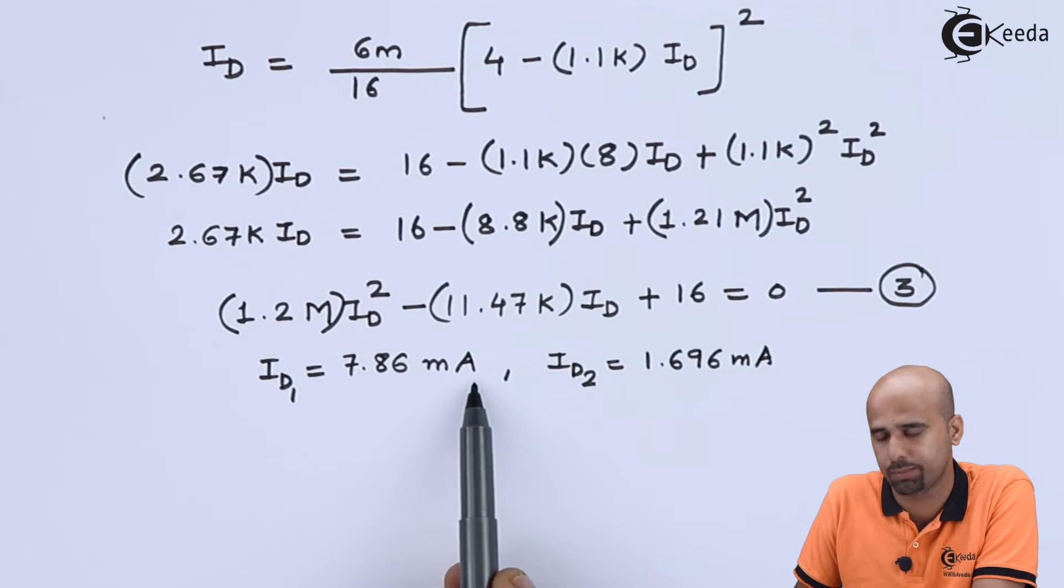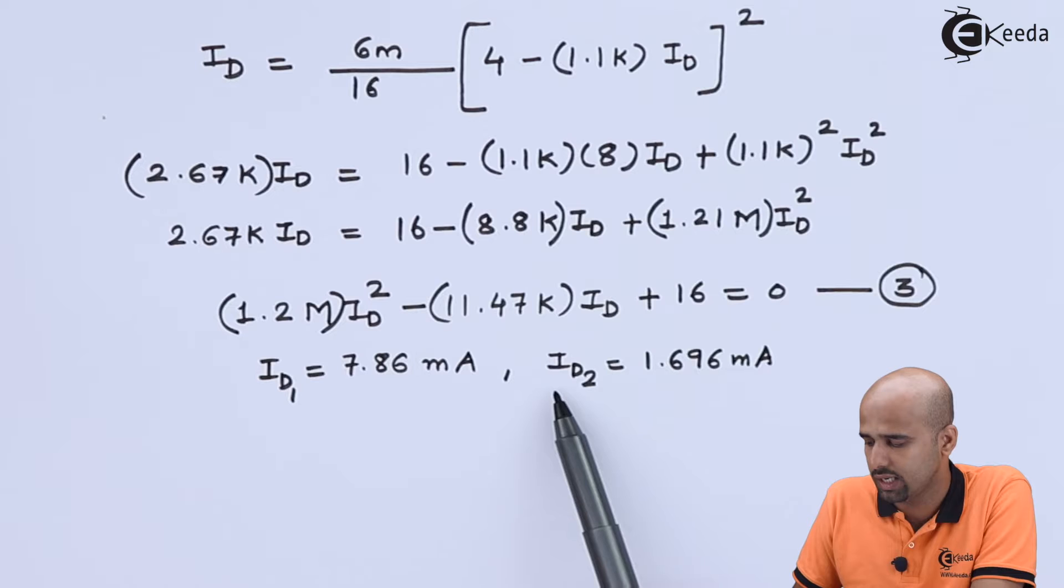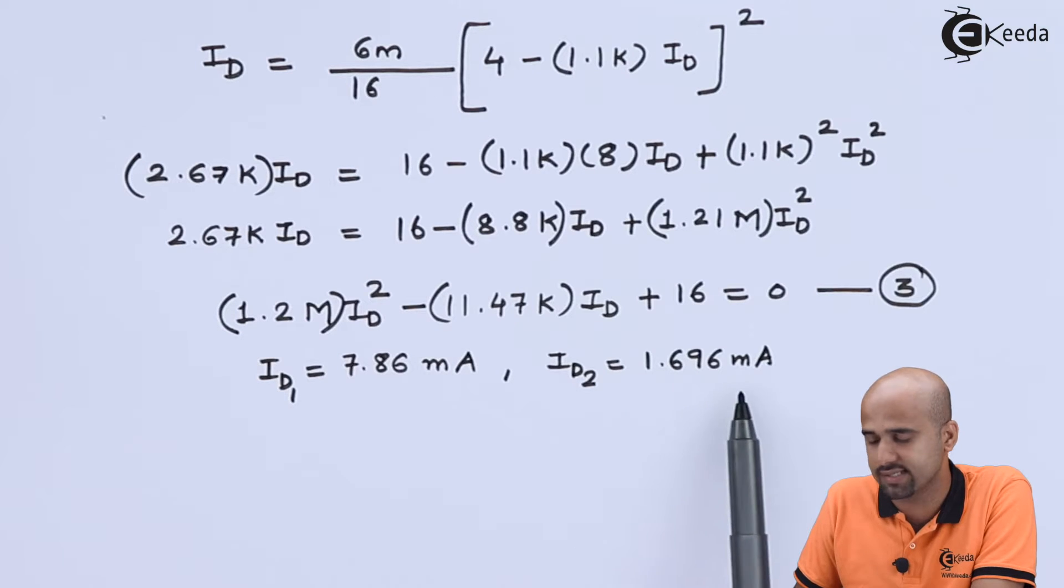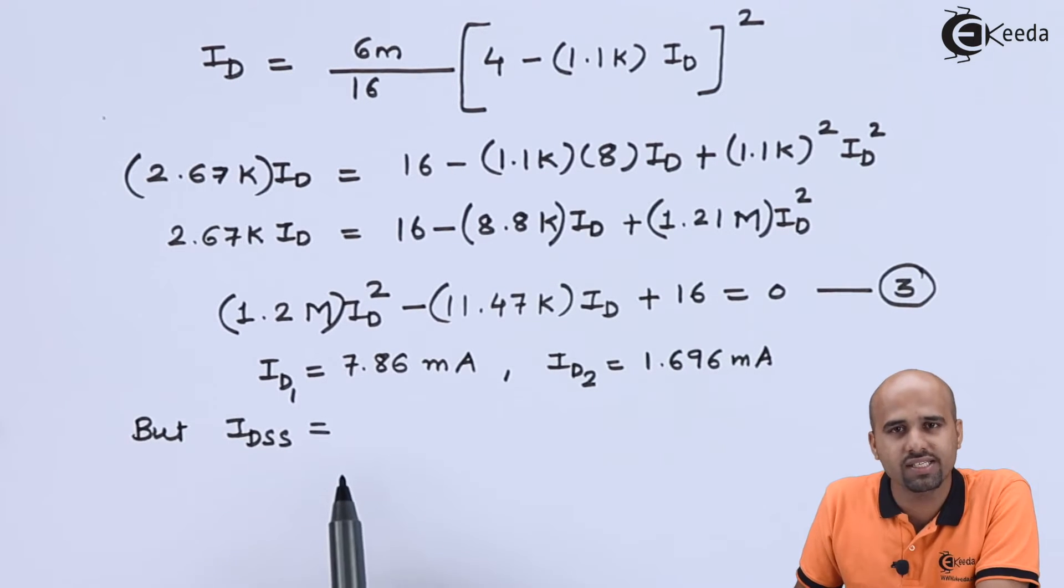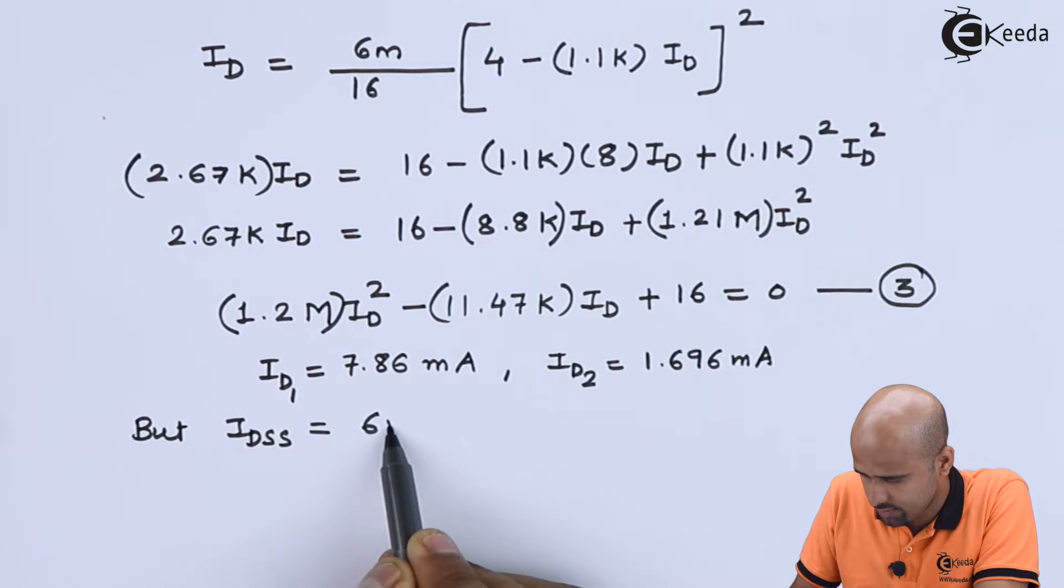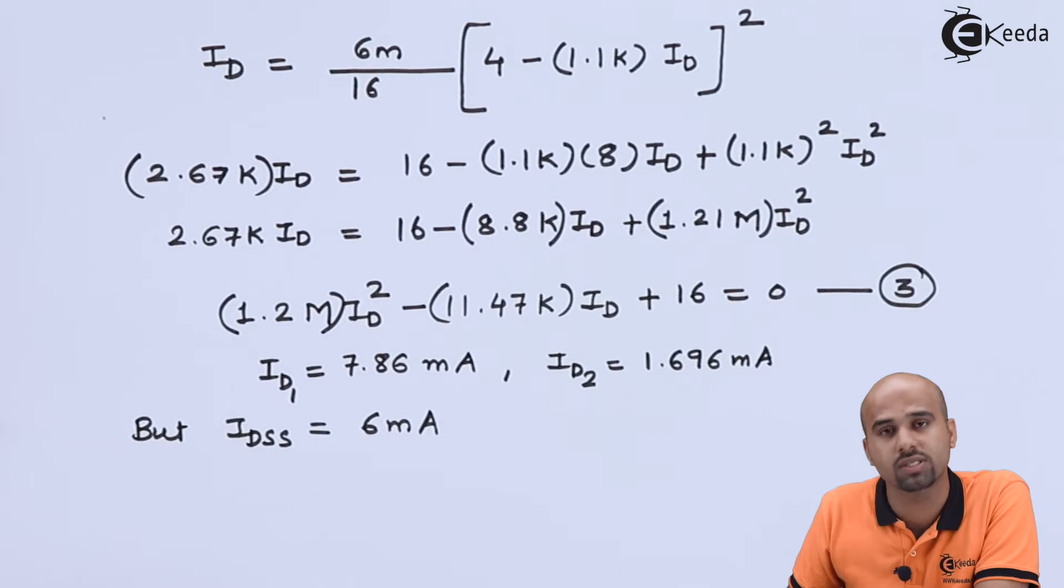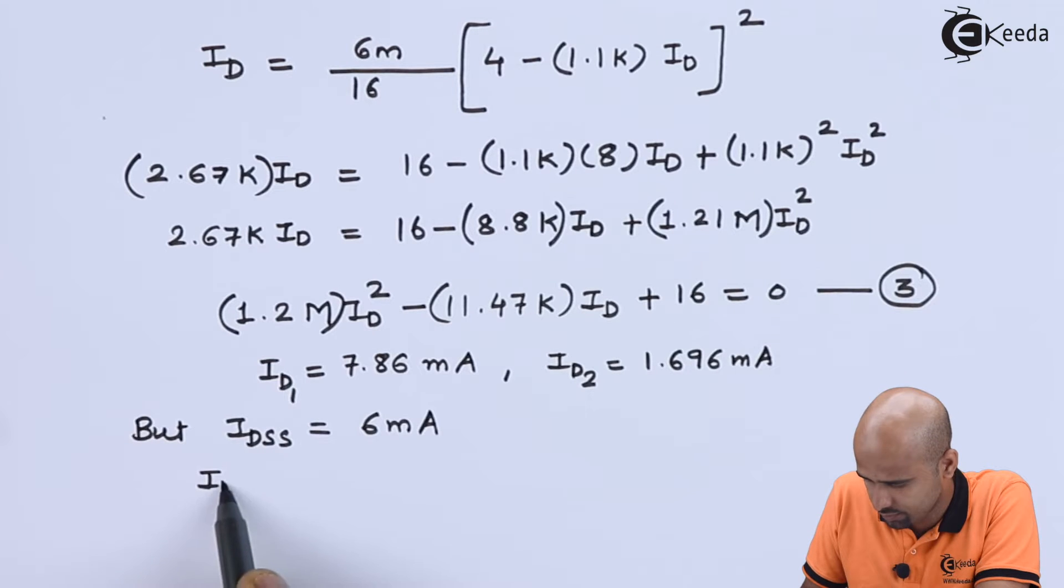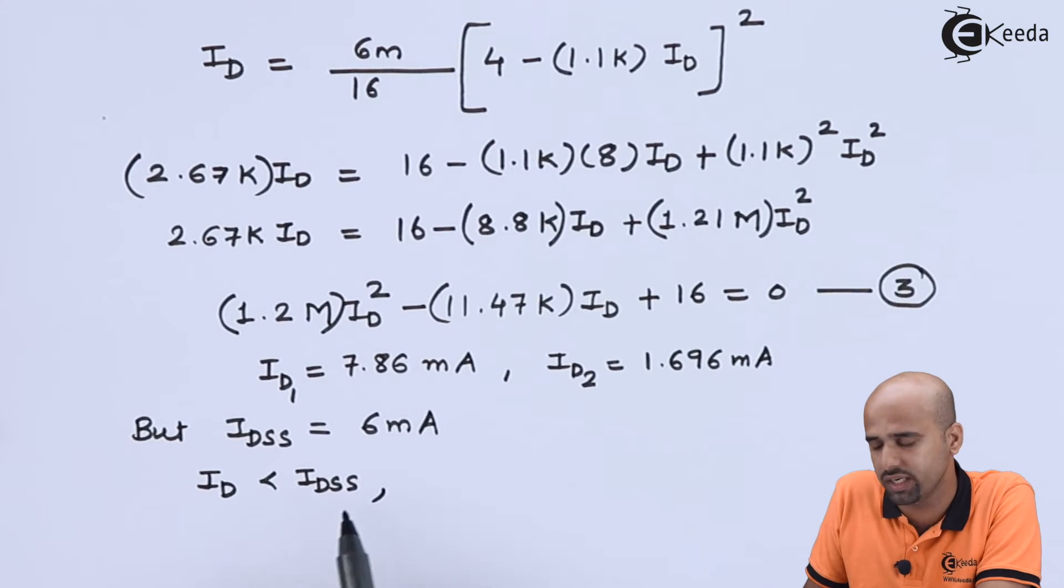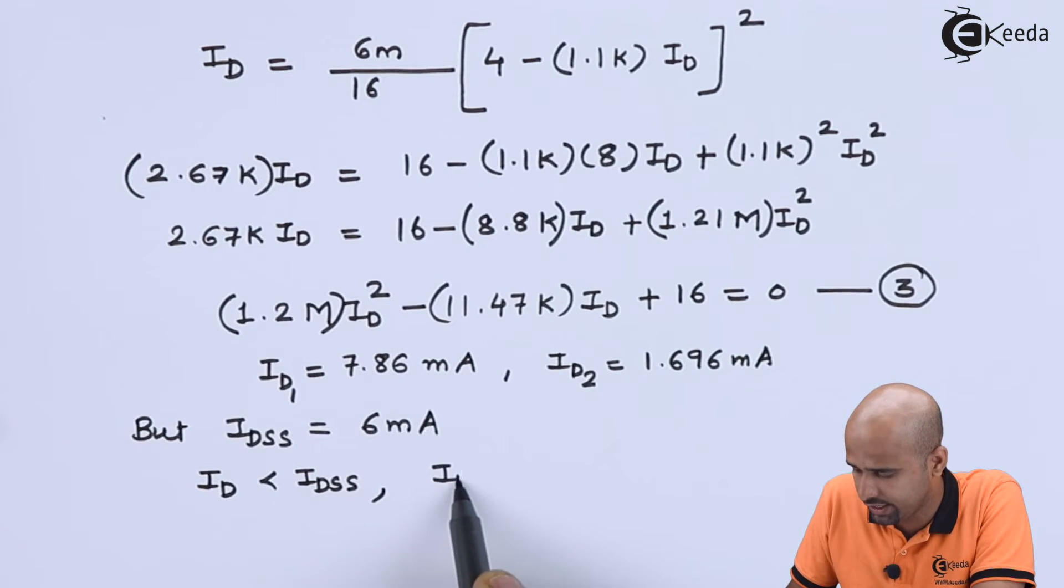We have got two values. One is 7.86 milliampere and another is 1.696 milliampere. Now I know that IDSS value is 6 milliampere and as I said that ID should be less than IDSS.